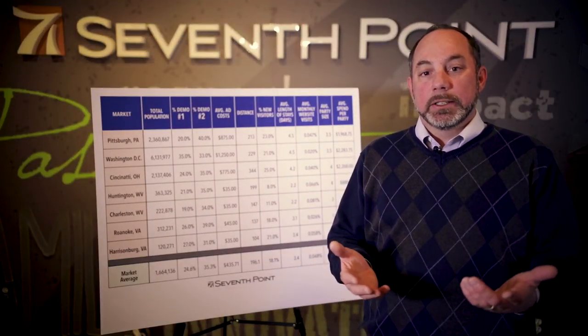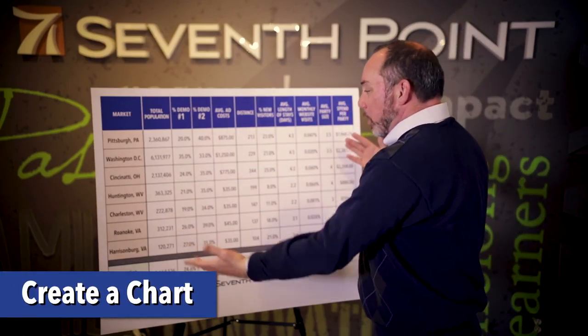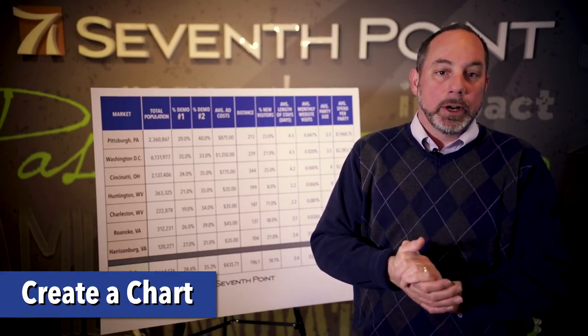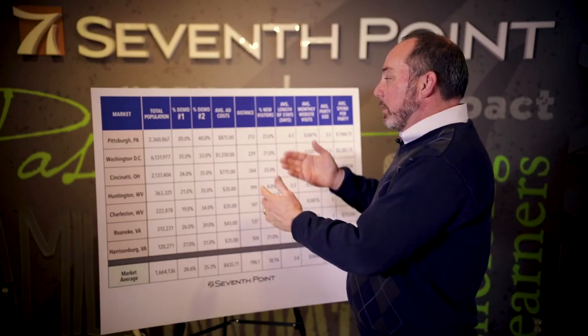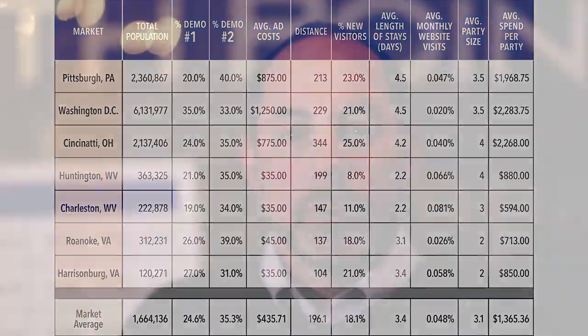Now that you have your markets and all the data points for your GeoMarket Selection Tool, the next step is to create a chart that houses all of the information — all of the individual data points for each market. Things like a population of 2.3 million people in Pittsburgh, or 23% new visitors coming from Pittsburgh, four and a half days as your average length of stay. For each of these markets, you're putting in the specific information that pertains to each city. Once you've created your chart with all the raw data, the next thing you need to do is understand how each of these markets perform against each other.